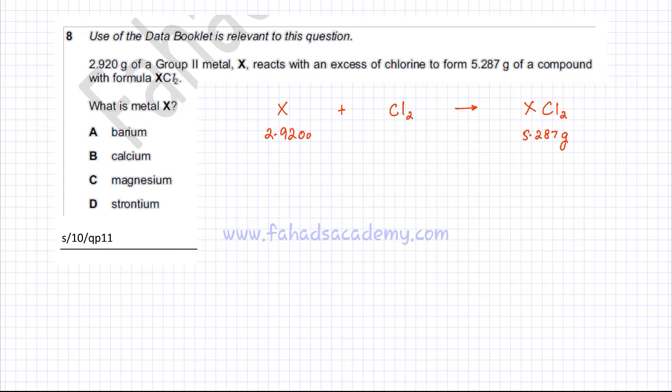The way to answer this question is to use ratios. If you look at the equation, this is a balanced reaction. The amount of moles of X and the amount of moles of XCl2 formed are exactly the same. It's 1:1 ratio, so the moles of X and the moles of XCl2 should be equal.